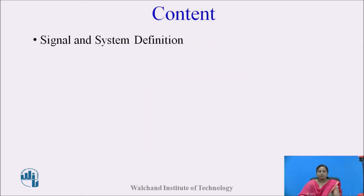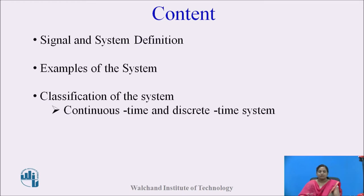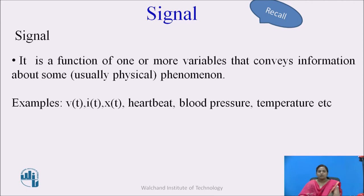These are the contents: signal and system definition. We will discuss examples of systems, then the classification of systems. Before moving ahead, let us recall the signal. The signal is the function of one or more variables that conveys information about some physical phenomenon. Examples of signals are voltage, current, any x(t) signal, heartbeats, blood pressure, temperature — there are a number of examples of signals.